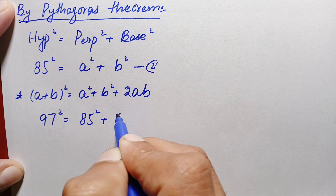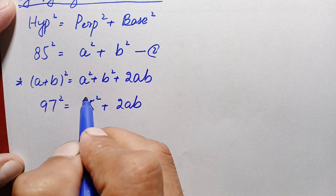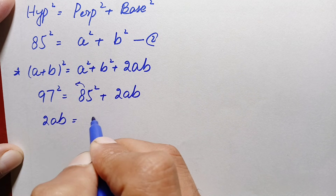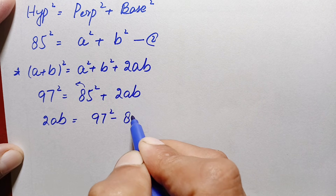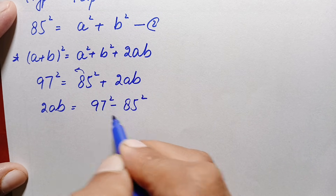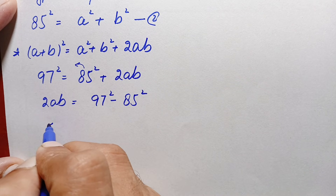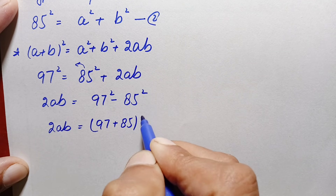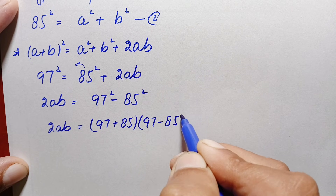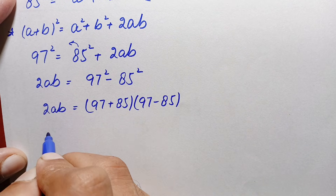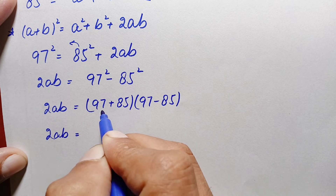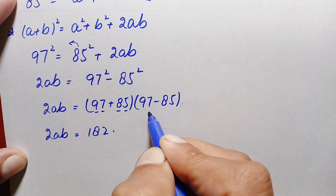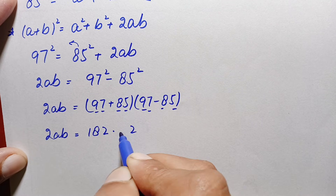We take 85² to the left-hand side: 2ab = 97² − 85². This is a difference of squares identity, so the right-hand side becomes (97 + 85)(97 − 85). Simplifying: 2ab = 182 × 12.